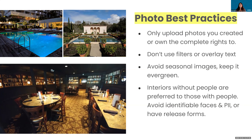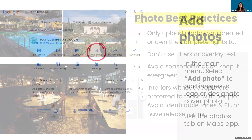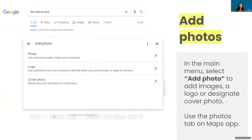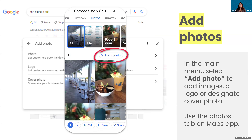Lastly, and this is sort of counterintuitive as marketers, but we want to make sure that our interiors don't have people in them so you can see the space and get a sense of the depth, breadth, and scale of the space. You also want to avoid identifiable faces and personally identifiable information like kids' names on backpacks and license plate numbers. Also make sure if you are including people that you have release forms. To add photos, look for that 'add photo' button in our interface — this will also allow you to upload your logo and choose what cover photo you want for your profile. It's really easy to add photos directly from your phone into that profile.